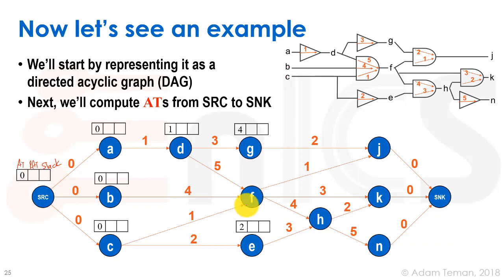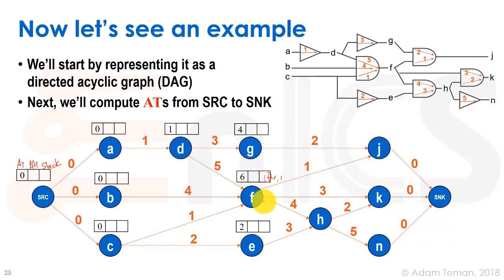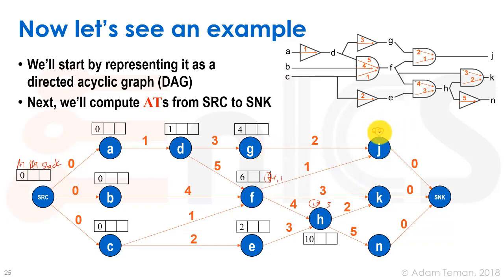F is more interesting because it's a three-input gate. At node F, we look at predecessor D: AT of 1 plus edge delay 5 gives 6. Then we have zero plus 4 equals 4, and zero plus 1 equals 1. The worst case is 6, so the AT at F is 6. For H, which has two inputs: 6 plus 4 equals 10, and 2 plus 3 equals 5, so the arrival time is 10. For J: 4 plus 2 equals 6, and 6 plus 1 equals 7, so the arrival time is 7.